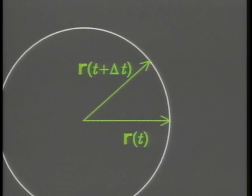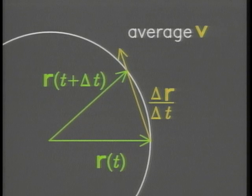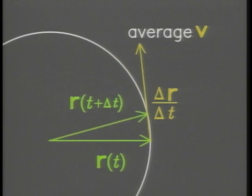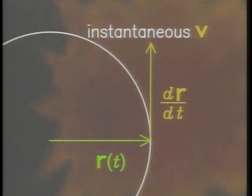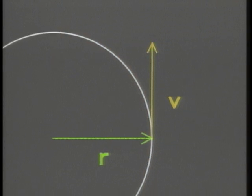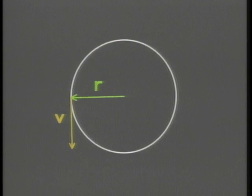Taking the difference of radius vectors at two different times, dividing by the time, and going to the limit gives a velocity vector perpendicular to the radius. Similarly, the acceleration is perpendicular to the velocity, so it always points inward along the radius vector.